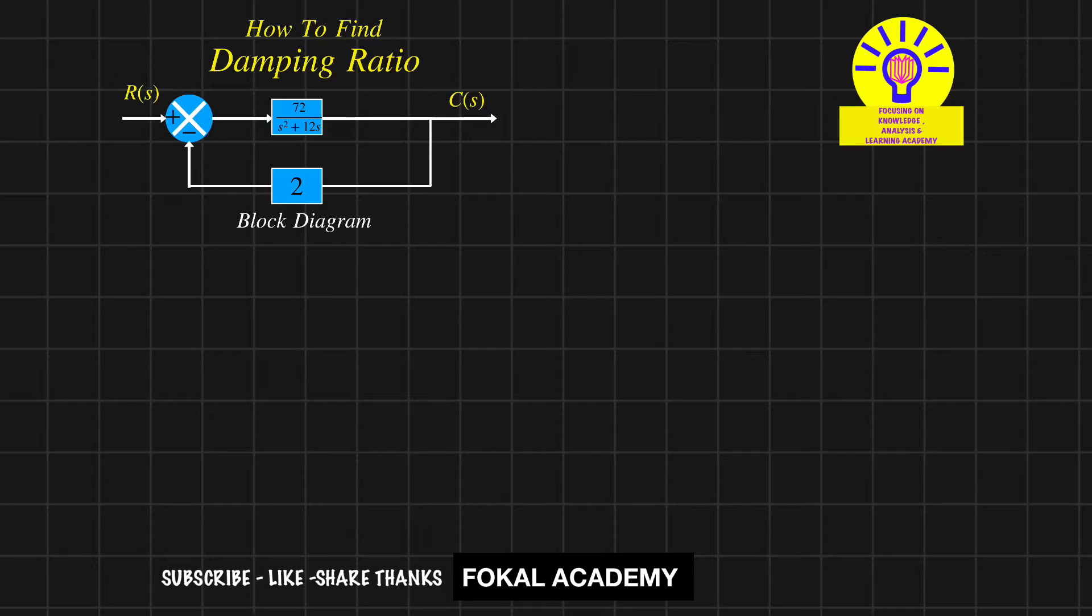We know that the transfer function is C(s)/R(s). The forward gain is G(s) and the feedback gain is H(s).